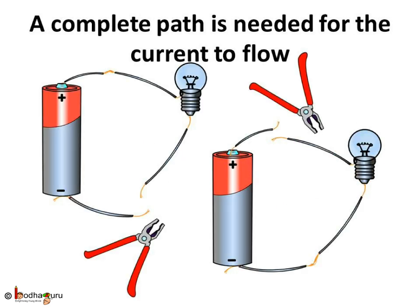What would happen if the wire is cut at any point? It should be simple to answer now. The current would not be able to complete the tour from the positive end to the negative end of the cell going through the two terminals of the bulb. So current wouldn't flow as there is no complete path for it. Hence, the bulb would not glow.